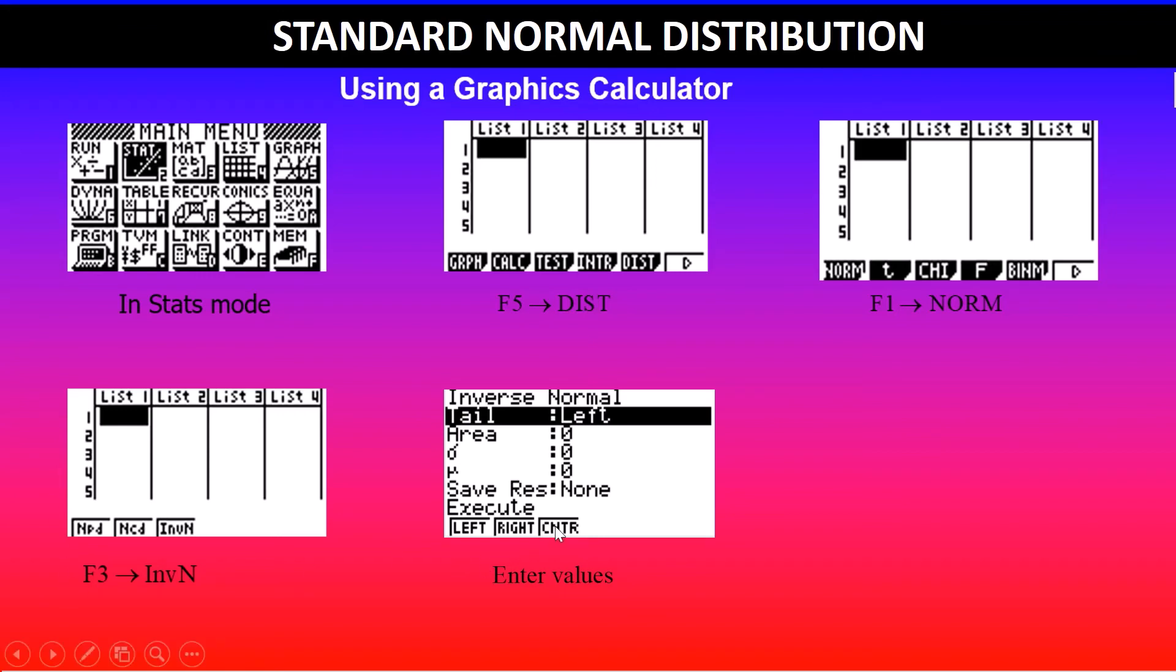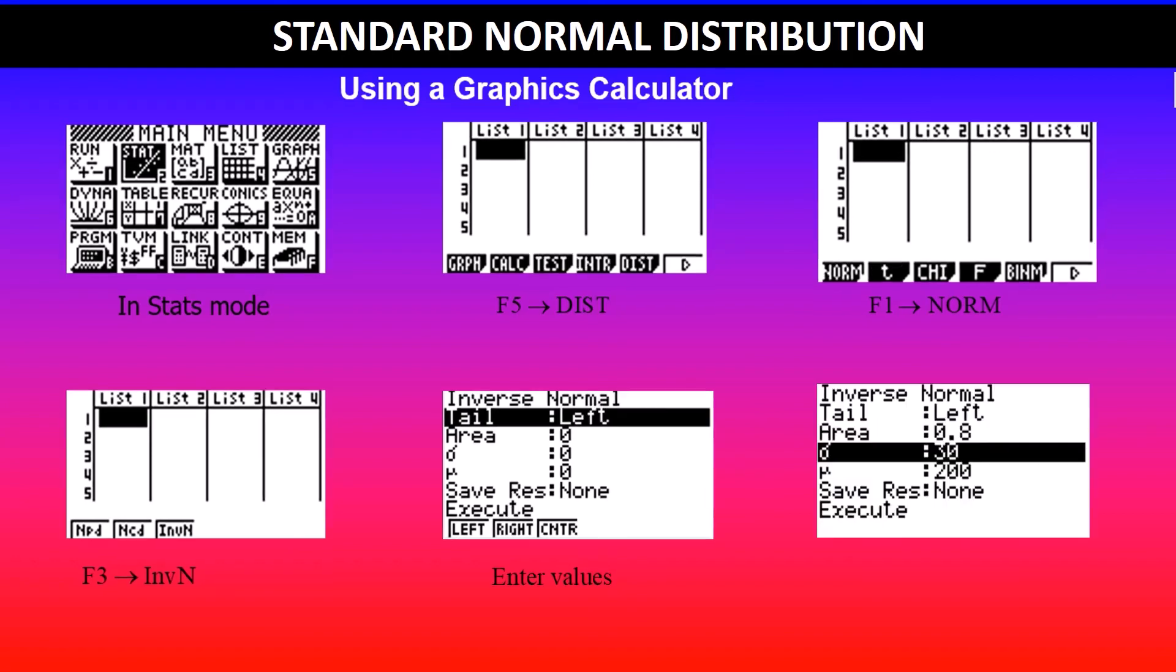In this case it is the left tail. The area value depends on what the question mentioned. Then you have got the standard deviation, mean value, and then press execute. You'll get the final result.